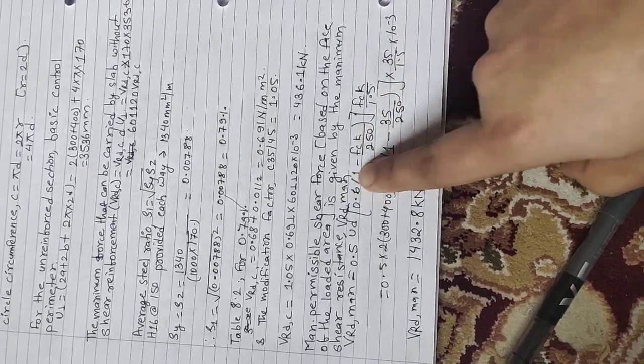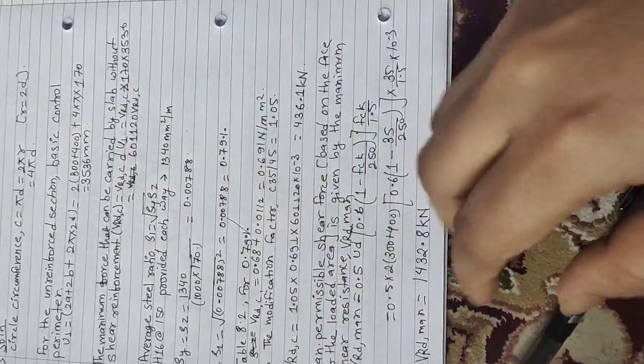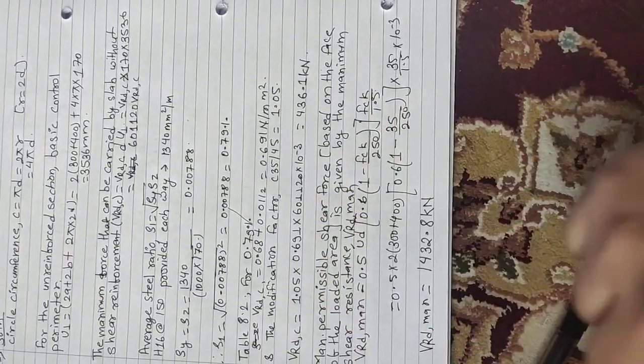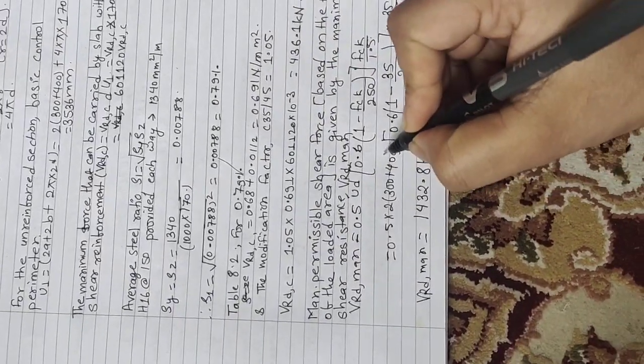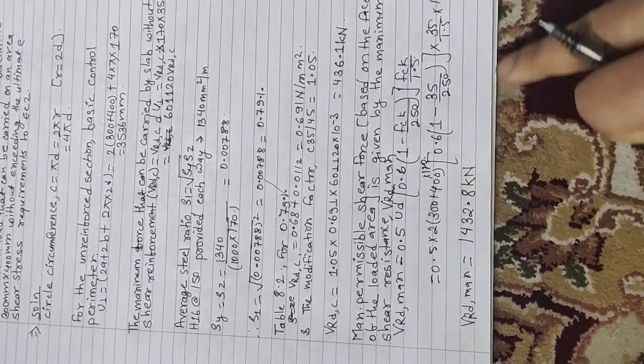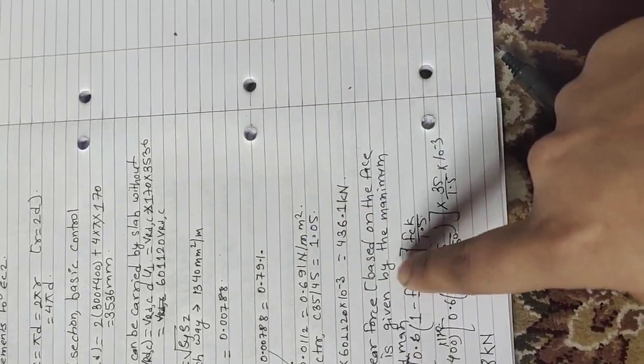By this way we calculate our V_Rdmax. We have fck = 45, and the loaded area for this is 2 times a into (a + b), means 300 into 400, the column size. We multiply by d, which will be 170 mm. So the maximum load carried by the slab will be 436.1 kN without shear reinforcement. Thank you for watching.